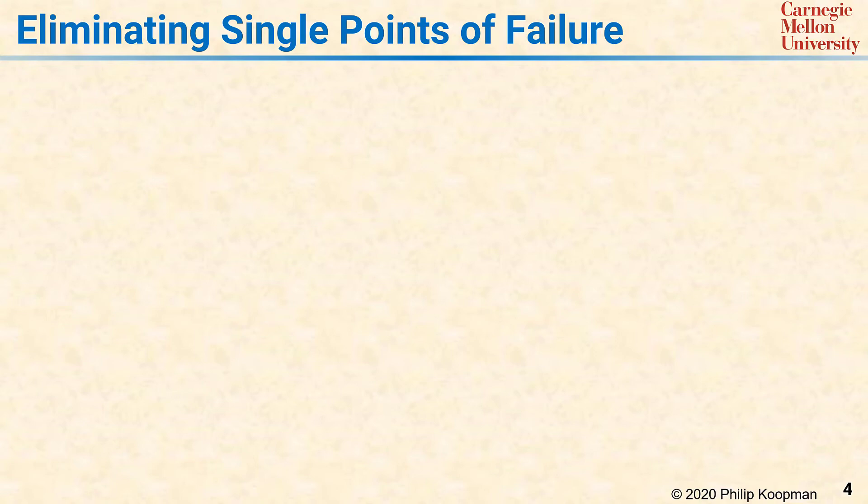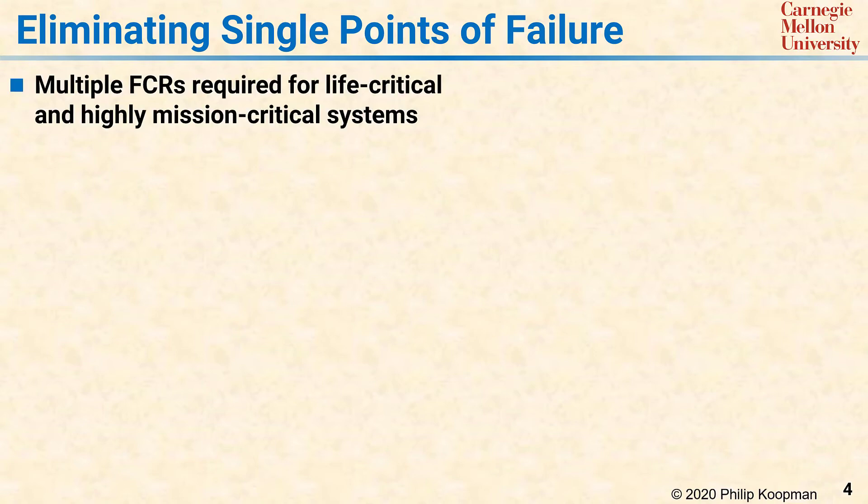The solution to avoiding single points of failure requires the use of redundancy. If your system must be more reliable than the reliability limit imposed by individual component failure rates, then redundancy is the only way to meet your system reliability goals. Typically, redundancy must be used if you wish to do better than about one critical system failure every 100,000 hours, depending on your system design. Generally, this corresponds to the level of reliability expected of systems that could cause death of a person or catastrophic results to a business.